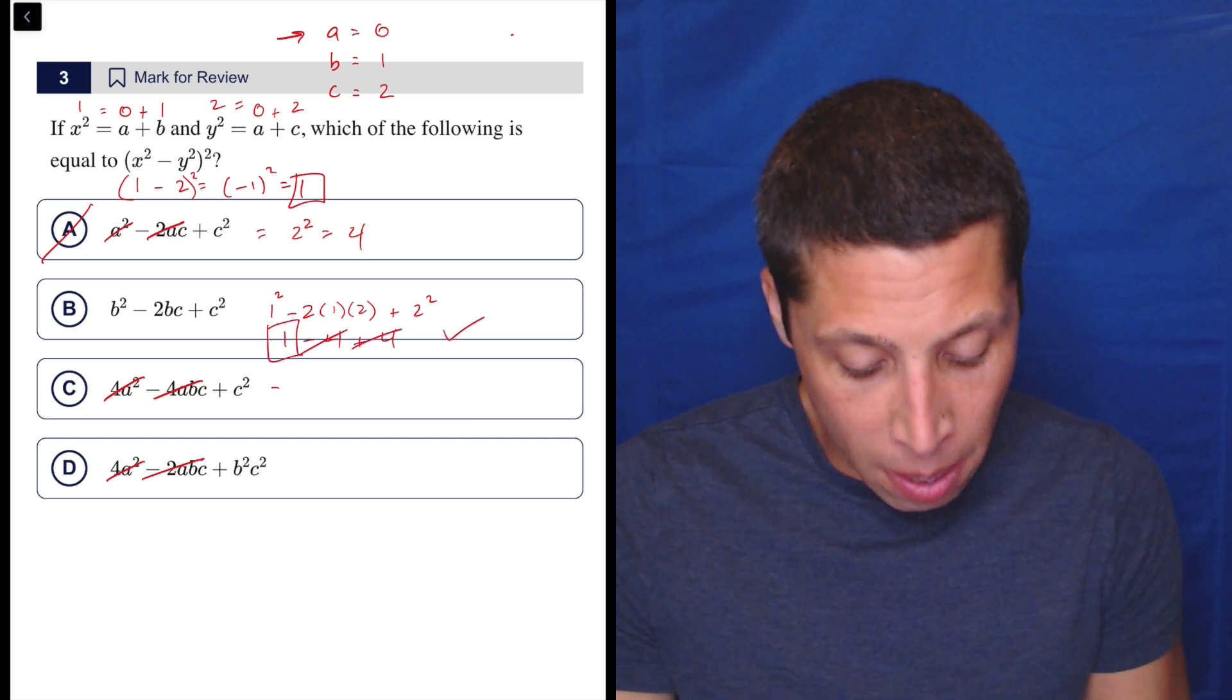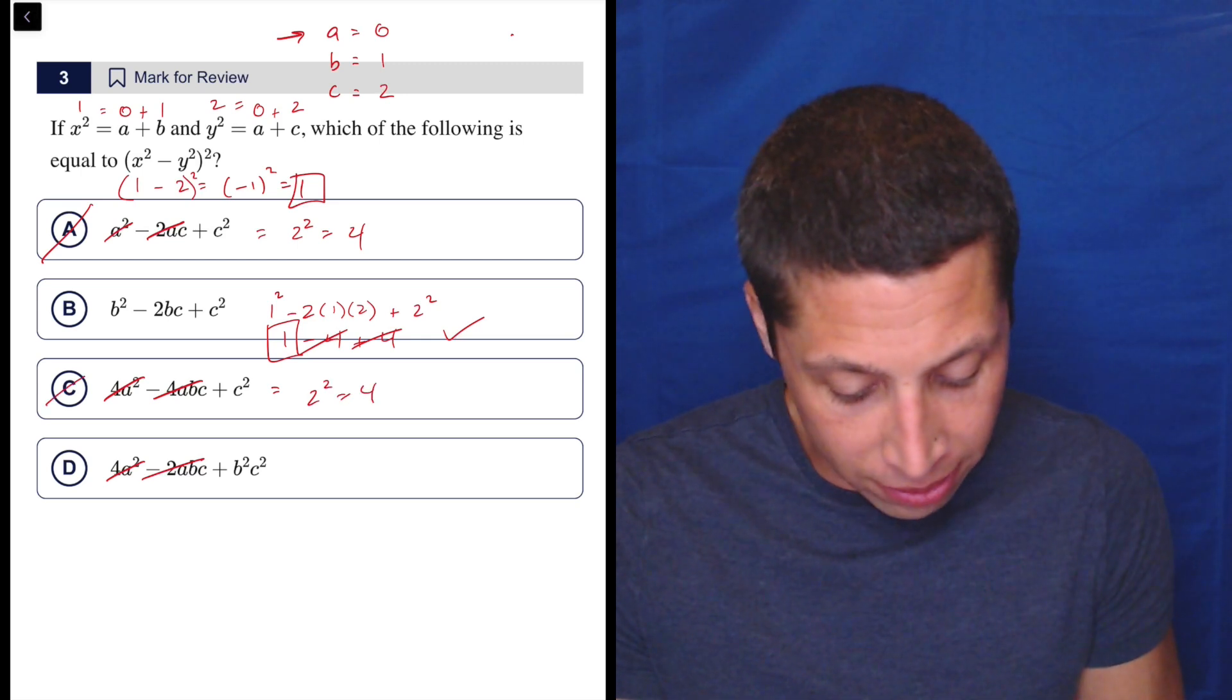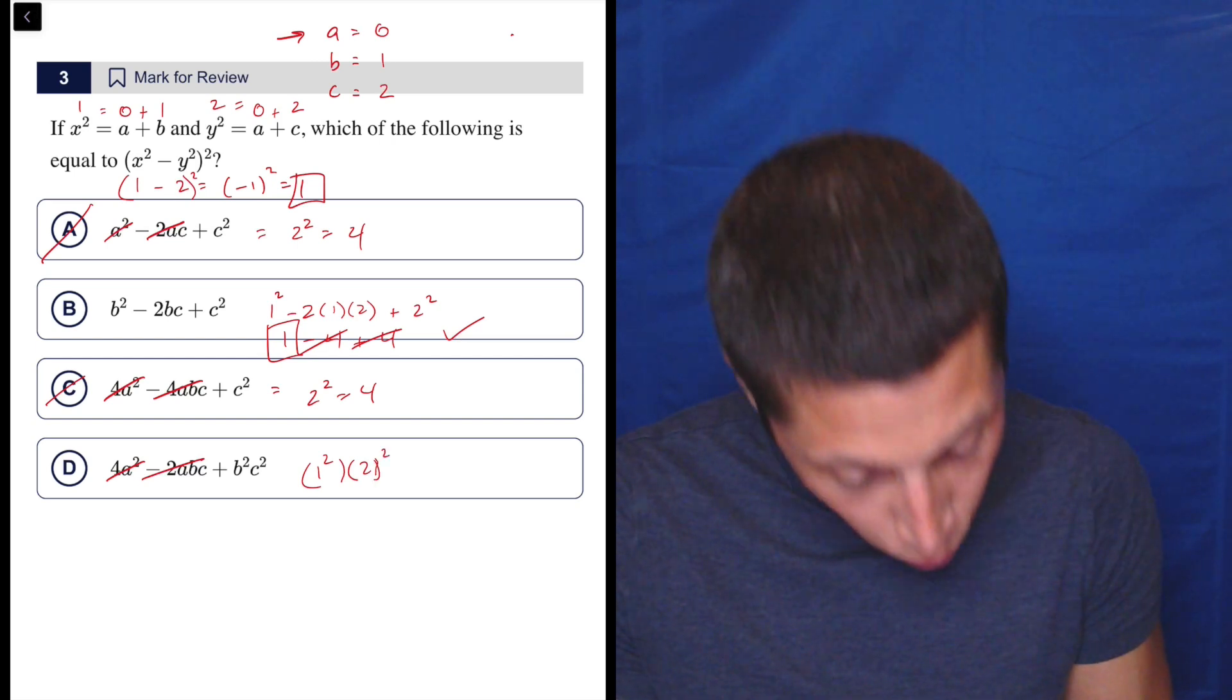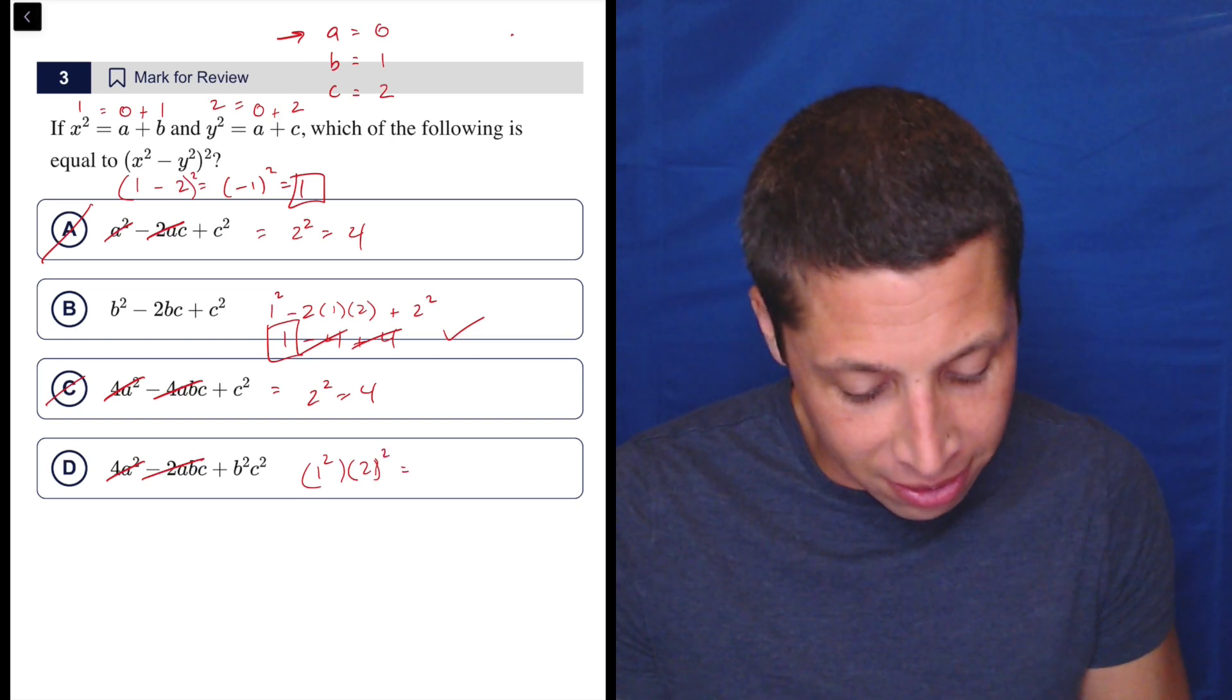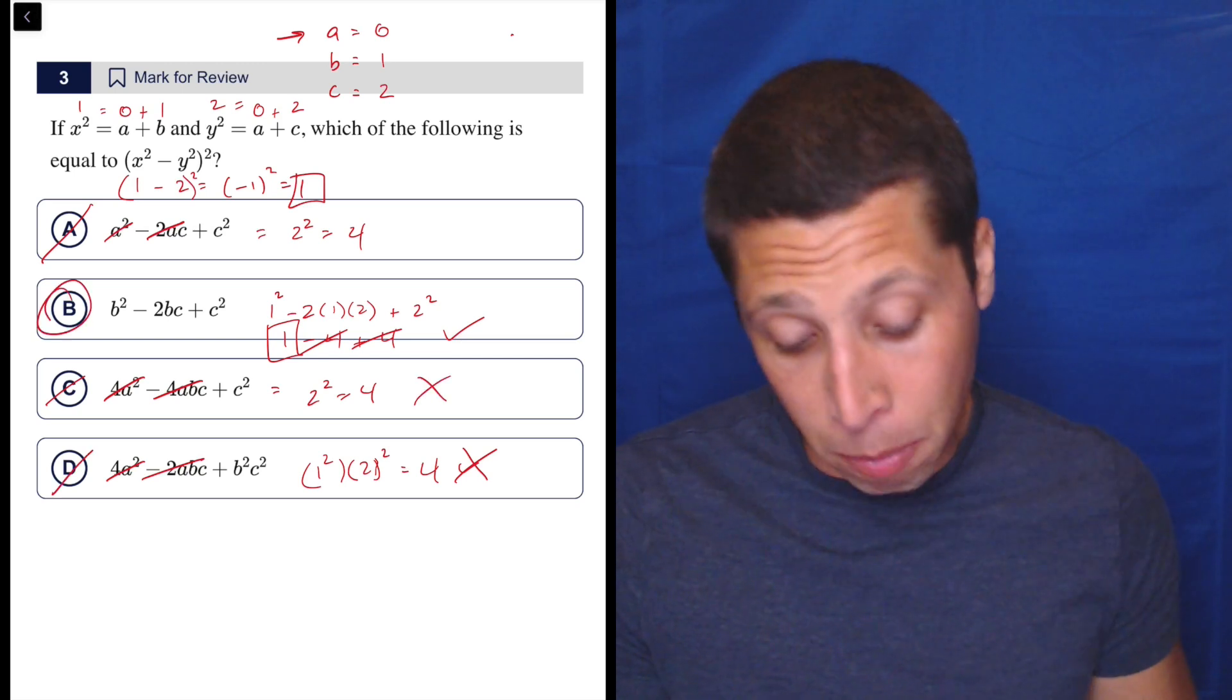I don't know if that's the answer, though. But if I continue on, I'm going to have 2 squared again. That's 4. And this is going to be 1 squared times 2 squared. So I know I did that inconsistently, but that's going to be still 4. So that still does not work. And that leaves me with B.